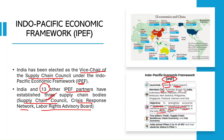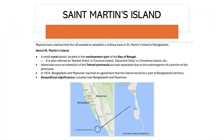IPEF has 14 members: Australia, Brunei, Fiji, India, Indonesia, Japan, Korea, Malaysia, New Zealand, Philippines, Singapore, Thailand, Vietnam, and the US. It was an initiative propounded by the US. IPEF relies on four pillars: trade, supply chain resilience, clean economy, and fair economy. India has signed onto pillars two and four — supply chain and fair economy — but has not signed the trade pillar due to stringent climate policy conditions, though India participates in the trade pillar as an observer.